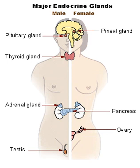Autocrine signaling is a form of signaling in which a cell secretes a hormone or chemical messenger called the autocrine agent that binds to autocrine receptors on the same cell, leading to changes in the cells.